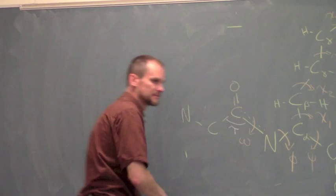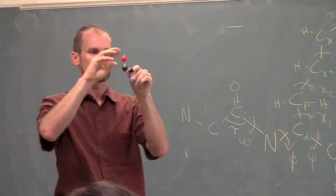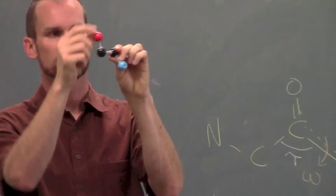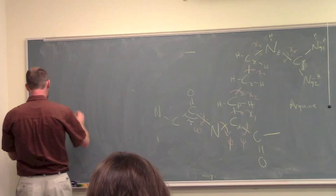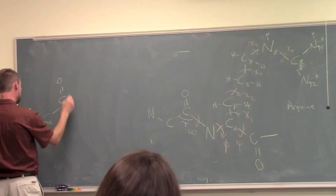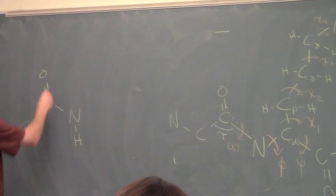It's a proline which circles back on itself and binds to the backbone. Because of that interaction, it can be on the cis side. They should be drawn trans, and if you flip over to cis, that's the cis-proline. Proline has cis-pro where omega is about 0 degrees in about 25% of prolines.